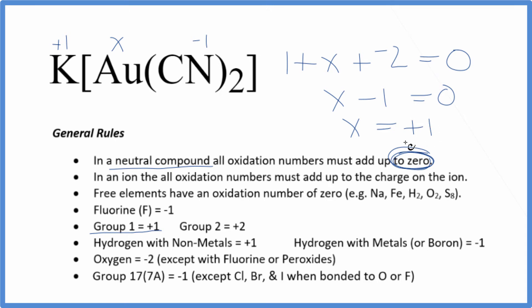So the oxidation number for the Au in K[Au(CN)₂] is +1. If we add these all up, we have 2 times -1 (that's -2), plus 1, plus 1, that gives us zero.